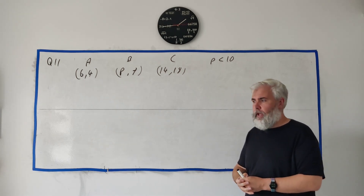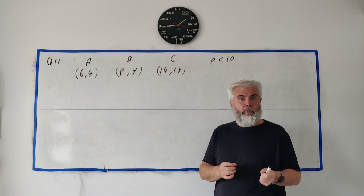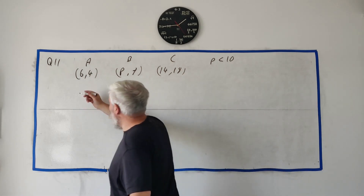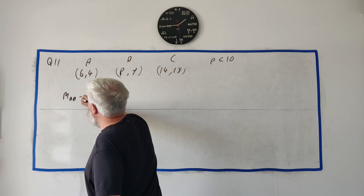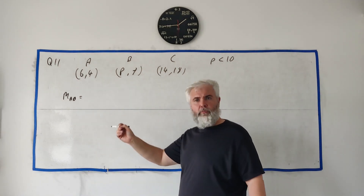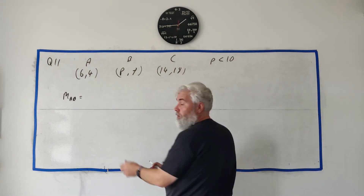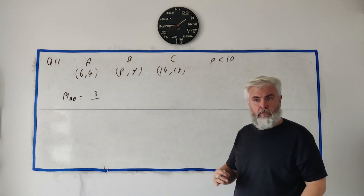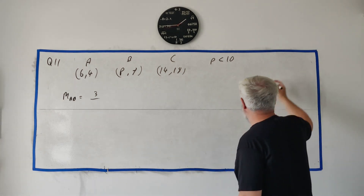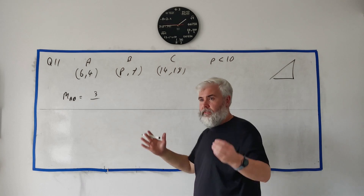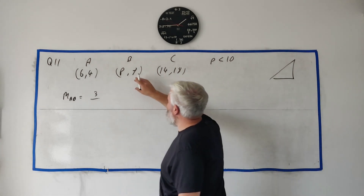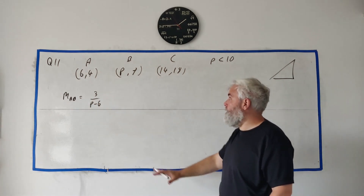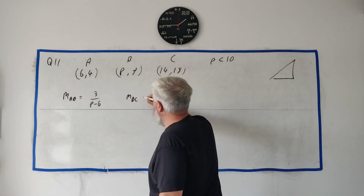Perpendicular is the important thing here. We know the slope and how it changes with another slope. So if we find the slope of AB using the slope formula: m of AB equals y2 minus y1 over x2 minus x1 — the rise over the run. That gives us 7 minus 4 which is 3, divided by p minus 6. That's the slope of AB.